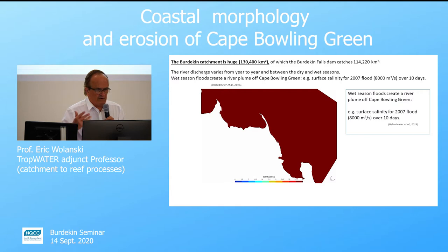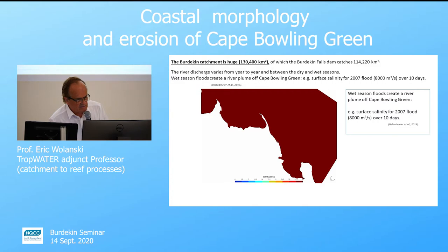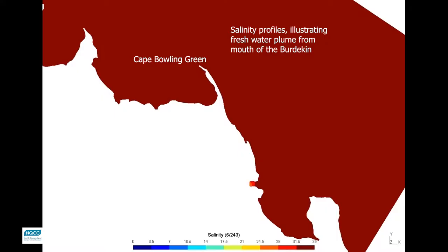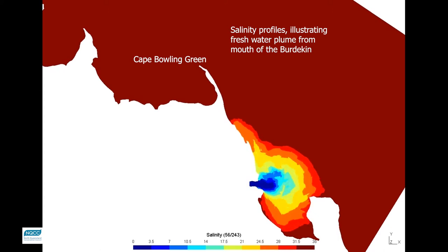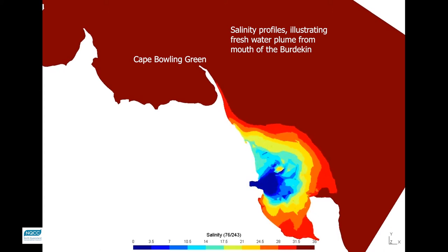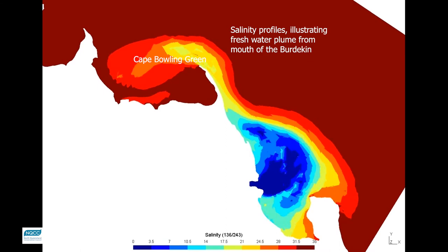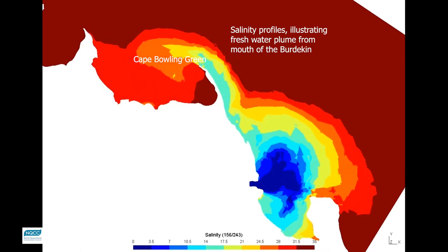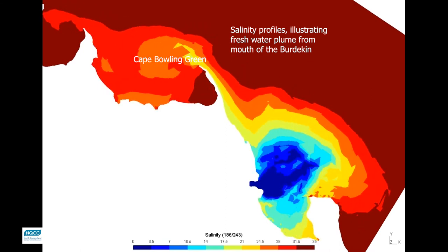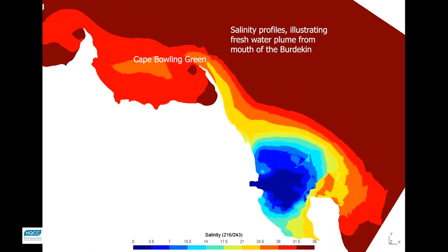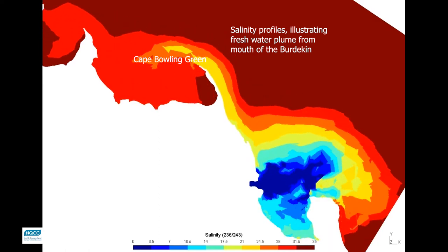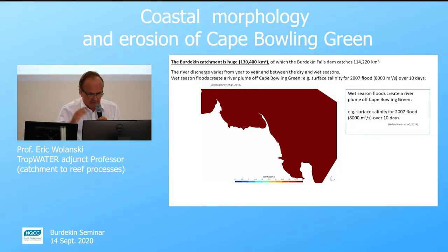In the wet season floods, it will create a plume off Cape Bowling Green. This is what it looks like — one view per hour over 10 days for the 2007 flood of 8,000 m³ per second. The plume moved largely to the north, with a little bit also moving south toward Cape Upstart, and most of the very low salinity water remained in the bay itself.